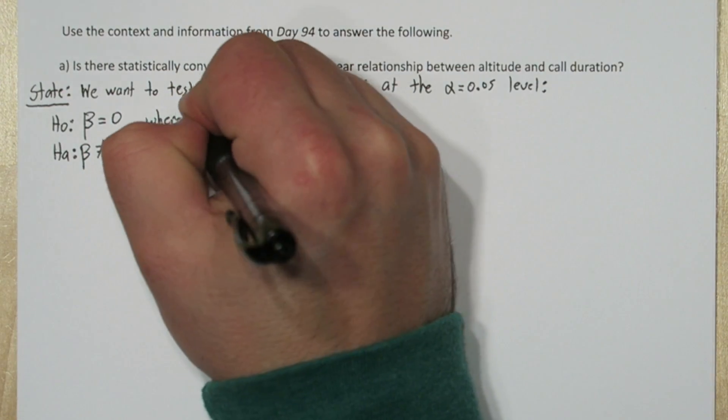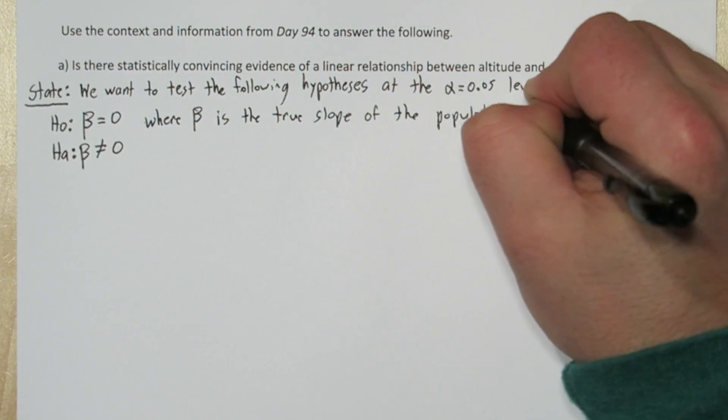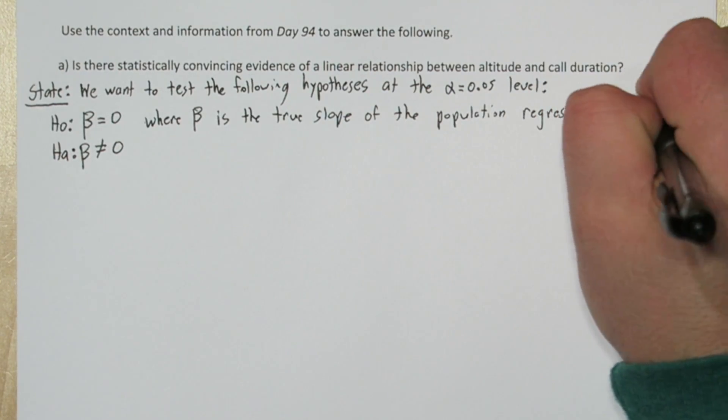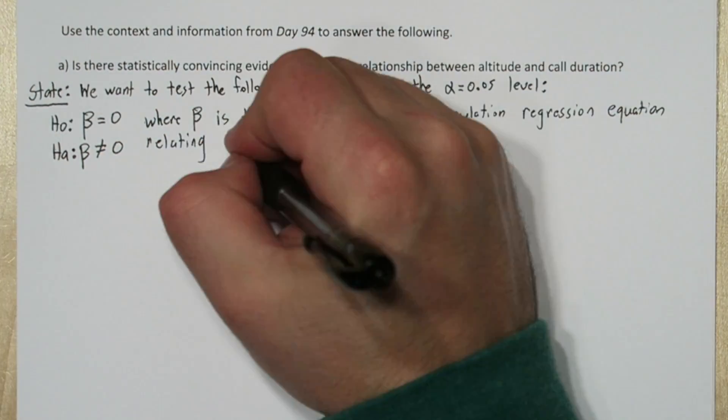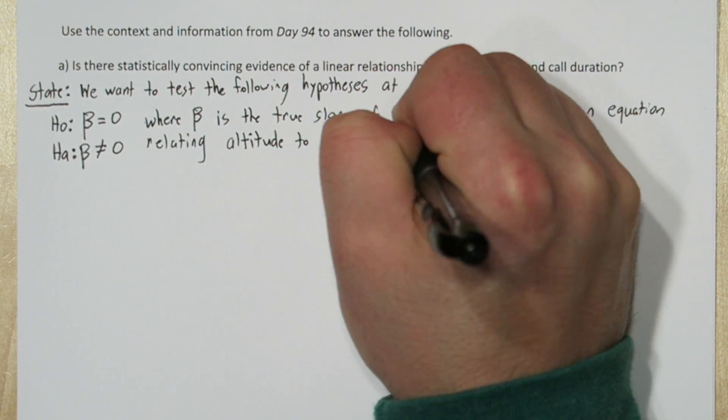Our null hypothesis is that beta equals zero. And our alternative hypothesis is that beta is not equal to zero, where beta is the true slope of the population regression equation relating altitude to call duration.